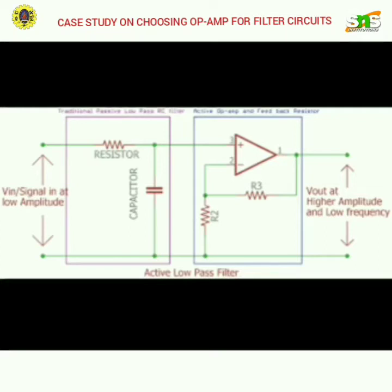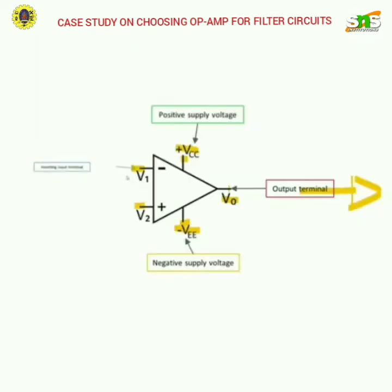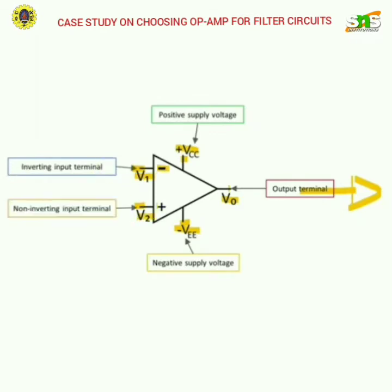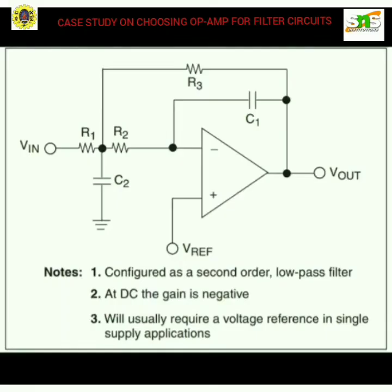We can use a digital filter to reduce the noise after digitizing the signal, but keep in mind the rule of the count. The task of selecting the correct single-supply operational amplifier for an active low-pass filter circuit can appear overwhelming as you read any op-amp datasheet and view all of the specifications.